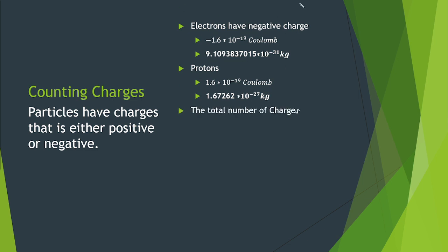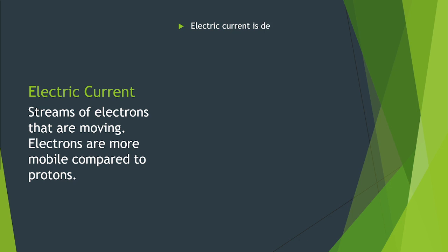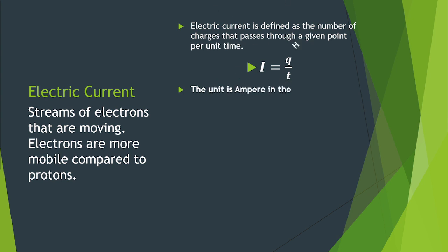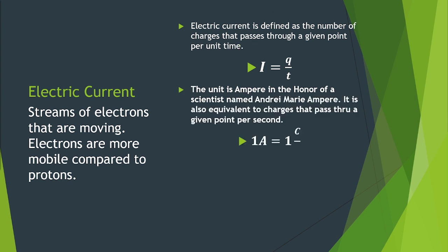The total number of charges is an integral multiples of the basic magnitude of charge times N. We have a formula for Q which is equal to N times E. Electric current. Streams of electrons that are moving. Electrons are more mobile compared to protons. Electric current is defined as the number of charges that passes through a given point per unit time. We have current I is equal to Q over T. The unit is ampere in the honor of a scientist named André-Marie Ampere. It is also equivalent to charges that pass through a given point per second. 1 ampere is equal to 1 coulomb per second.